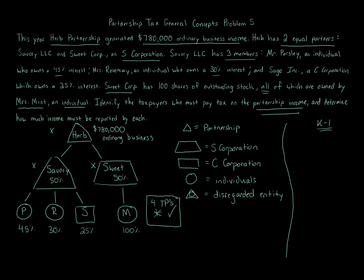So we write out the four ultimate taxpayers: Mr. Parsley, Mrs. Rosemary, Sage Inc. — which is a C corporation and does pay tax on its return, unlike S corporations or partnerships which flow through to the next owners — and Mrs. Mint. These four taxpayers are the ones who ultimately pay tax on the $780,000 of ordinary business income, because the entities above them are all flow-through entities.